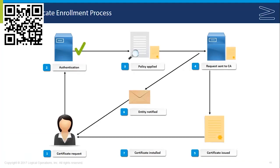Users and other entities are going to obtain certificates from a CA through the certificate enrollment process, and this process has some specific steps associated with it. Number one, the entity requests a certificate. They go through a particular procedure to obtain the certificate, and that procedure will vary. In some cases it's automated, in other cases it's manual, using different methods — wizards versus webpages, for instance.